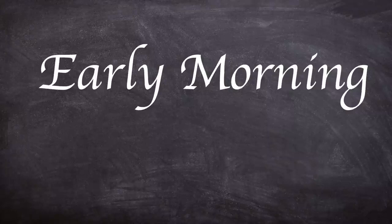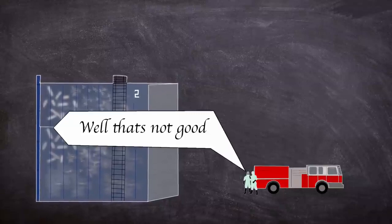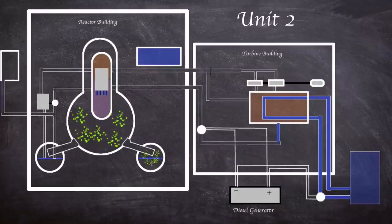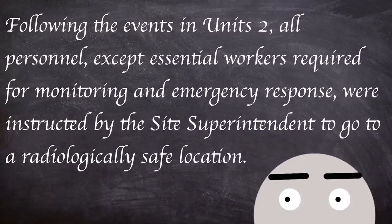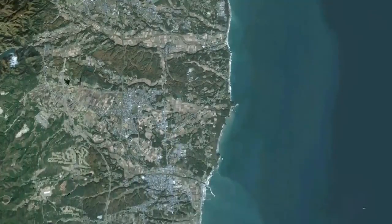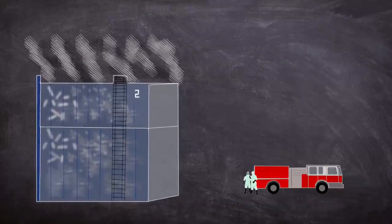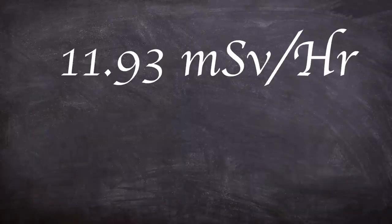In the early hours of the 15th of march explosions were heard at units 2 and 4 with the top half of unit 4's building being damaged. A drop in pressure readings on the suppression chamber of unit 2 was seen. This hinted in the containment of the reactor had been compromised meaning an uncontrolled release of radioactive isotopes. Following the events in unit 2 all personnel except essential workers required for monitoring and emergency response were instructed by the site superintendent to go to a radiologically safe location. 650 people evacuated to Fukushima Daiani nuclear power plant site approximately 12 kilometers away. White smoke or steam was seen to be coming from the top of unit 2's reactor building. A radiation measurement was taken of 11.93 millisieverts an hour at the main gate at 9 am.